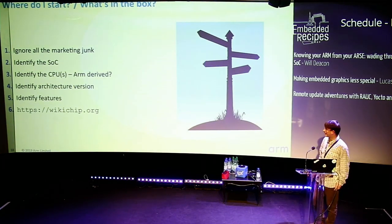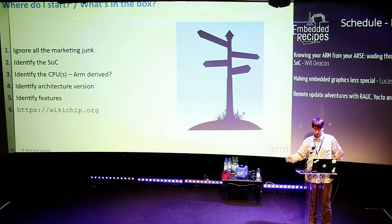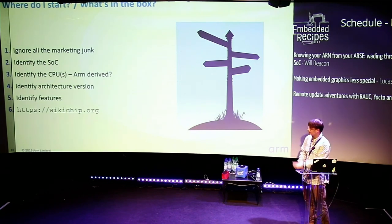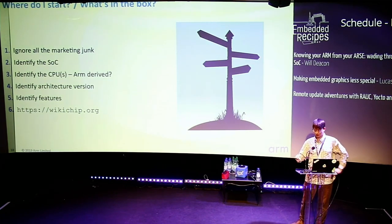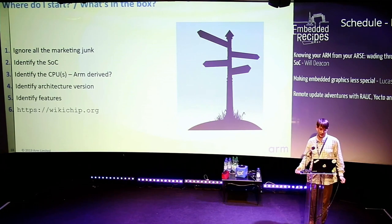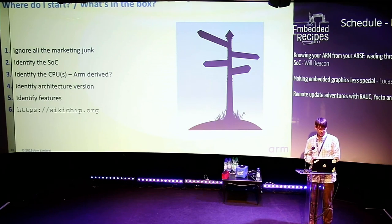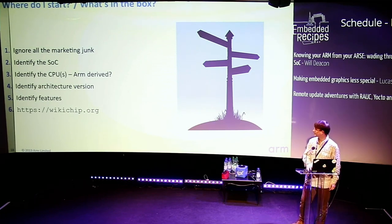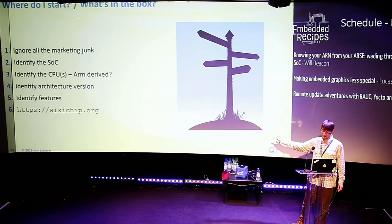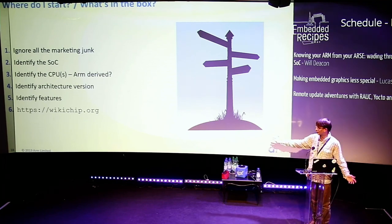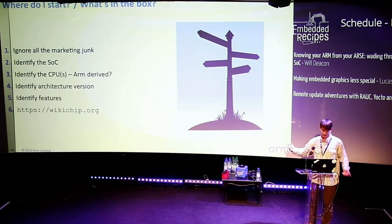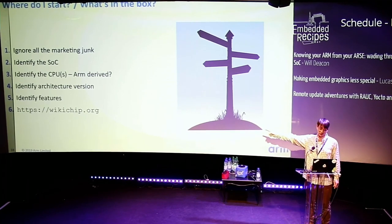Now I'm going to walk through some example SoCs. I picked three where one of them is pretty easy to figure out, and the other two are much more difficult. Here's what you can do: ignore all the marketing gunk, identify the SoC, try and figure out what CPUs are in that SoC, are they from ARM or not, find out the architecture version, and from that you can find out the features. WikiChip is your friend - they have lots of useful information.